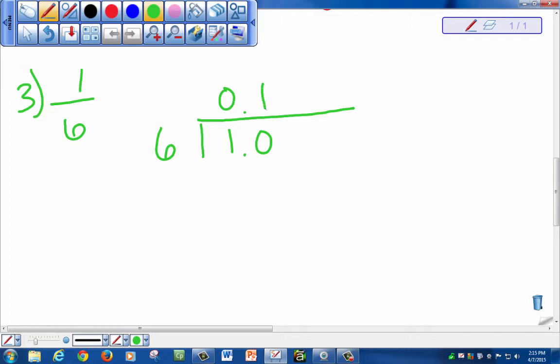Can 6 fit into 10? Yes, once. Because 1 times 6 gives you 6. We subtract. 10 minus 6 equals 4. We add another 0. We bring it down, and our number now is 40.